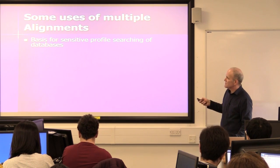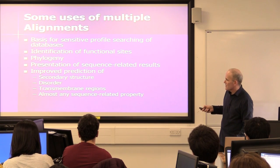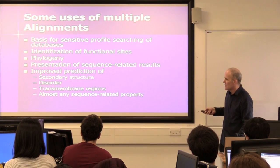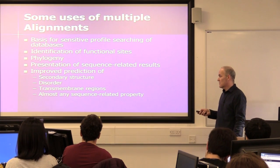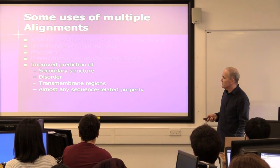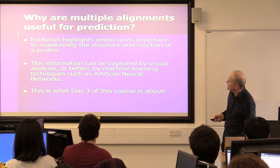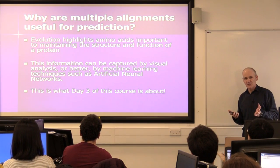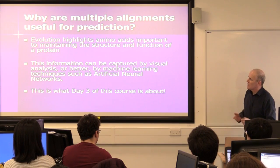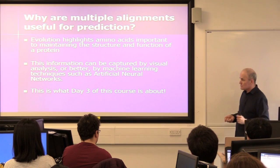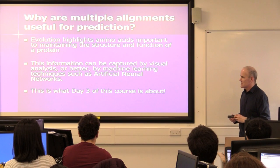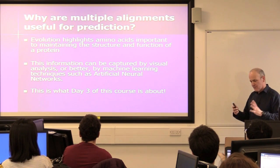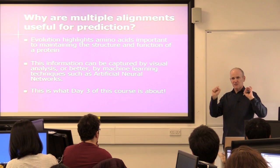Multiple alignments are used for sensitive profile searching, phylogeny, presentation of sequence-related results, improved prediction of secondary structure, disorder prediction — both of which you can do within Jalview — and transmembrane regions, which you can do with other resources at UCL. Why are they useful for predictions? Evolution highlights positions: when you're aligning sequences, you're looking back in evolution, and it highlights the amino acids important to maintaining the structure or function of the protein. You can capture that by visual analysis, and we'll get to analysing a multiple alignment in detail to understand protein structure and function either today or next week.